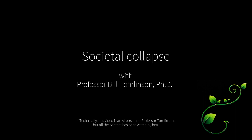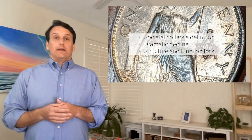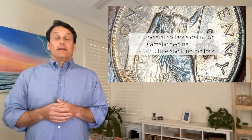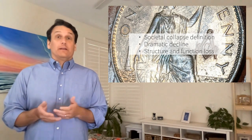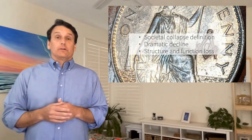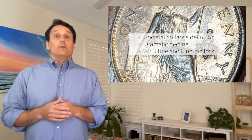Welcome to Professor Tomlinson's One-Minute Summaries. Today we'll be talking about societal collapse. Societal collapse is when a society dramatically declines, losing its structure and function over a relatively short period.